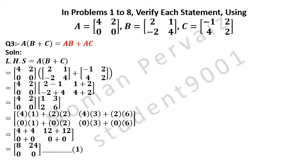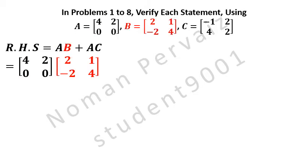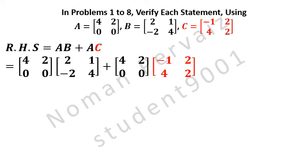Next, we take the right-hand side, which is AB plus AC. We write the right-hand side: here we write the value of matrix A, then matrix B, plus matrix A, then matrix C, as given in the question above. Next we will multiply the first two matrices.